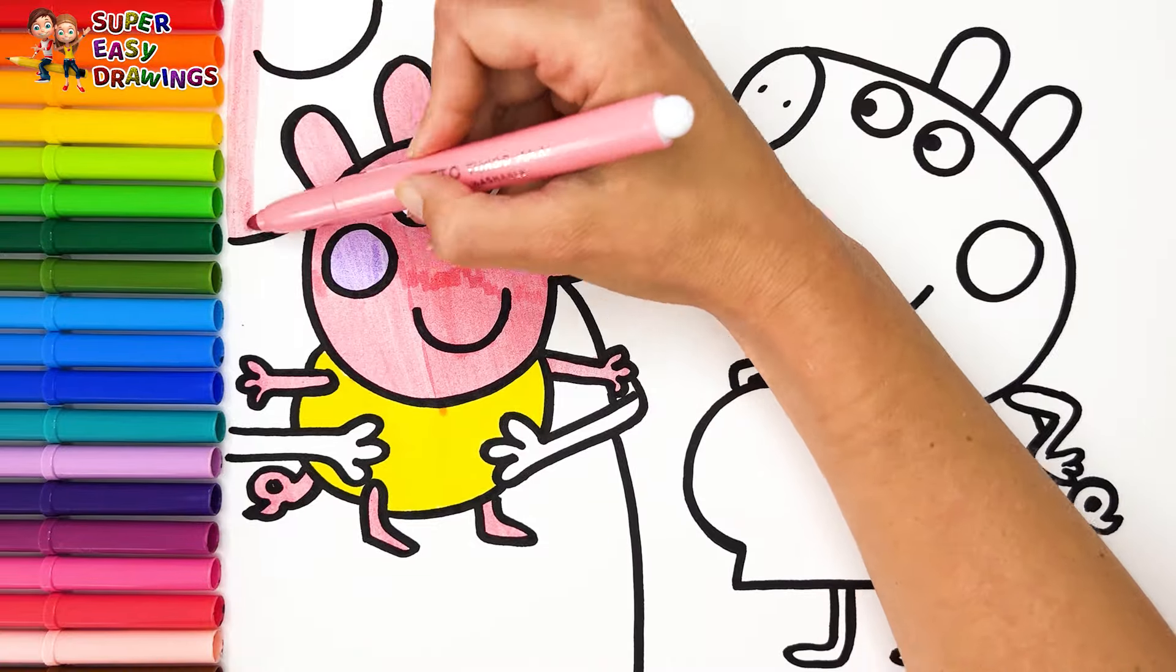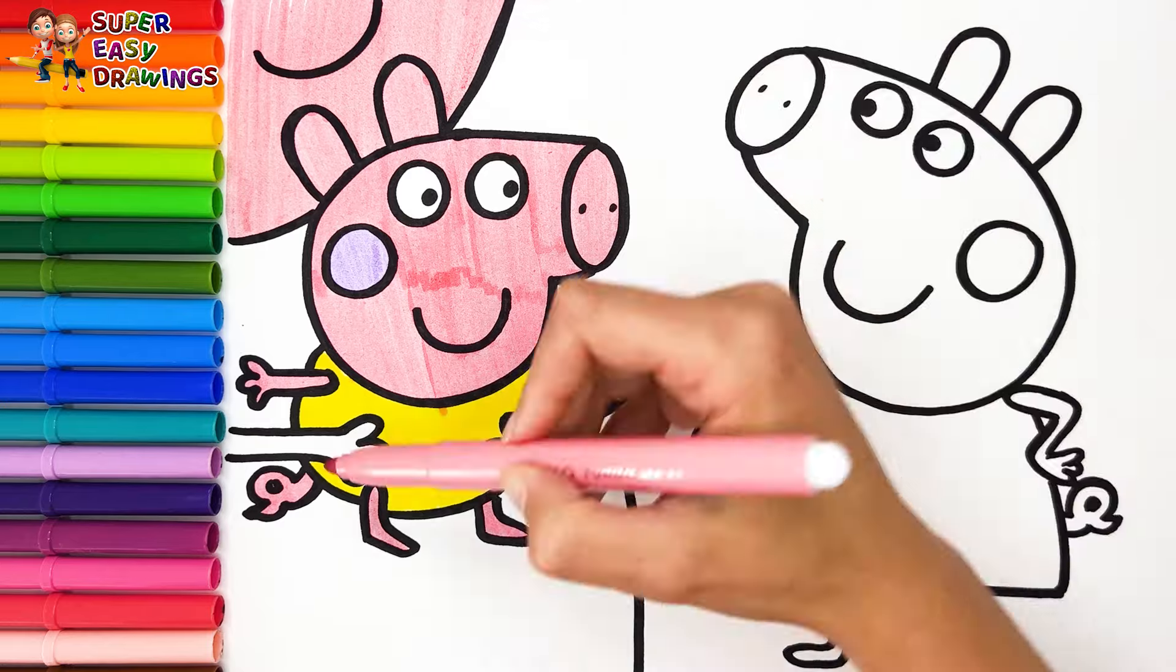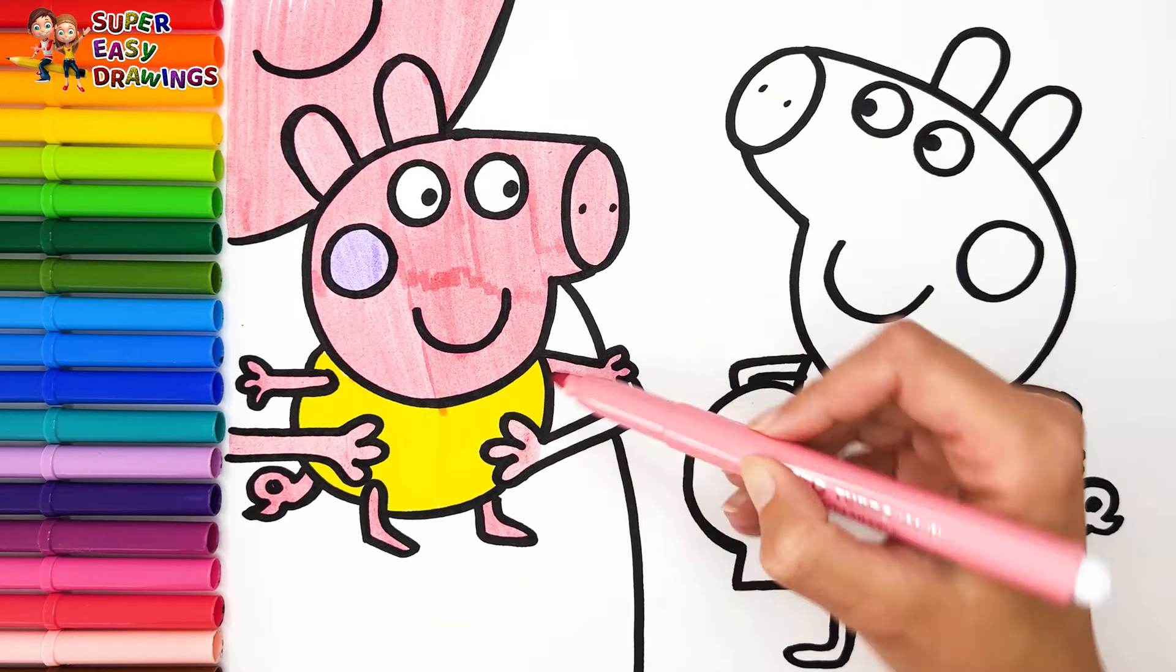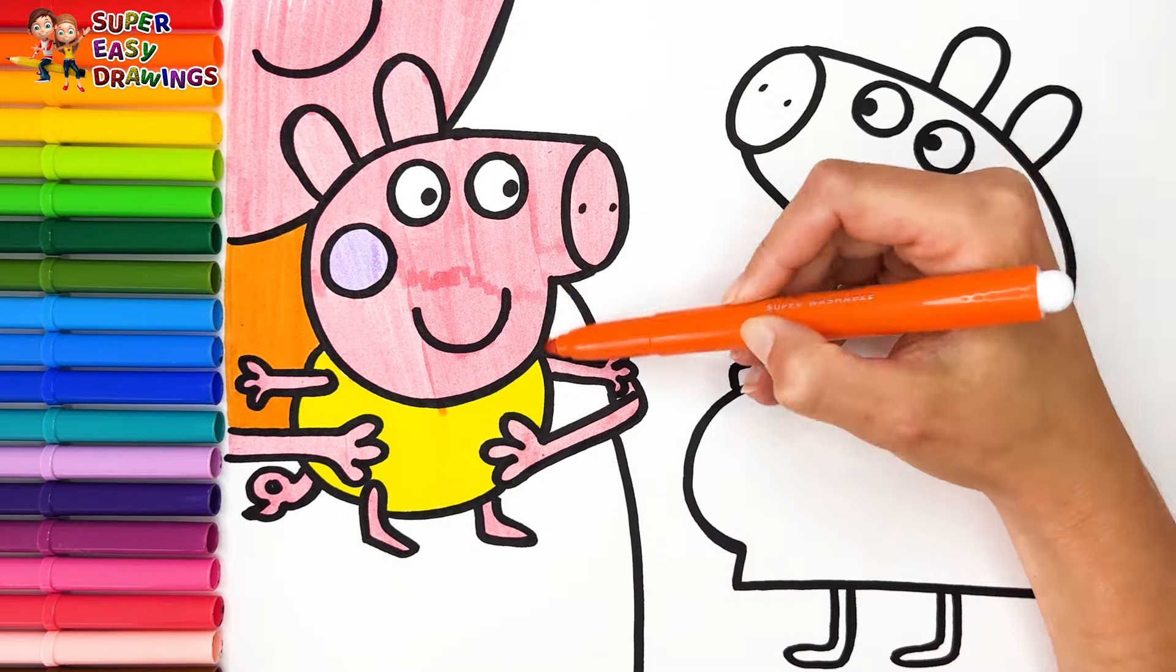Now let's color Mommy Pig. Mommy Pig's skin will be colored with the same pink marker as Peppa's. Then I use this orange marker for her dress.